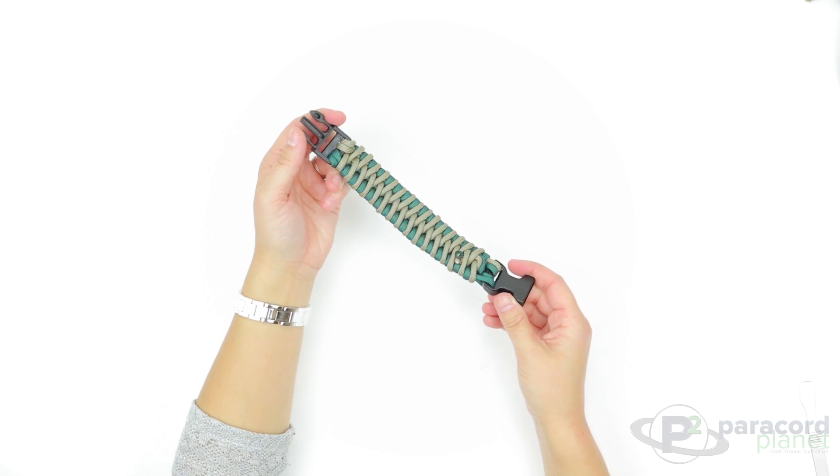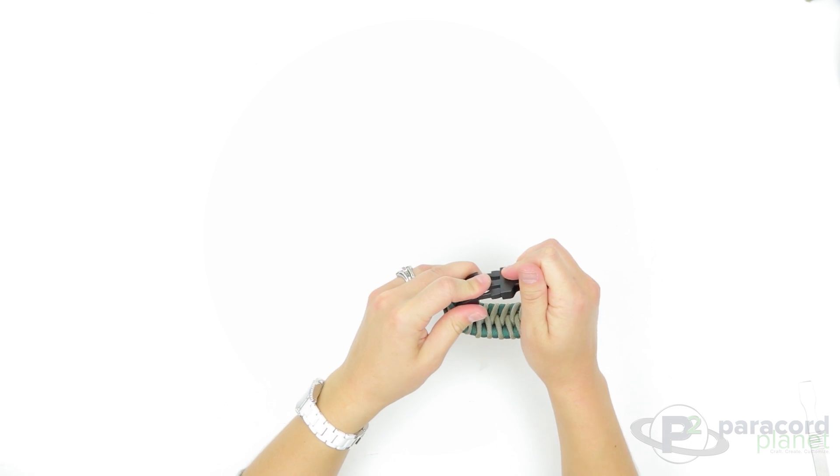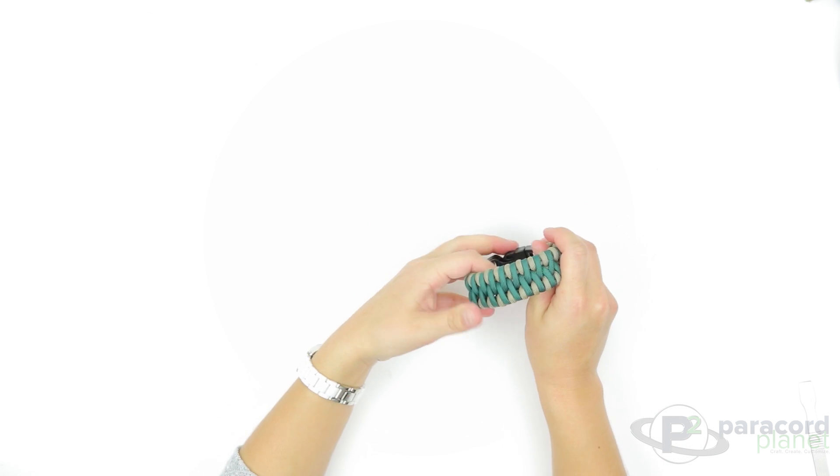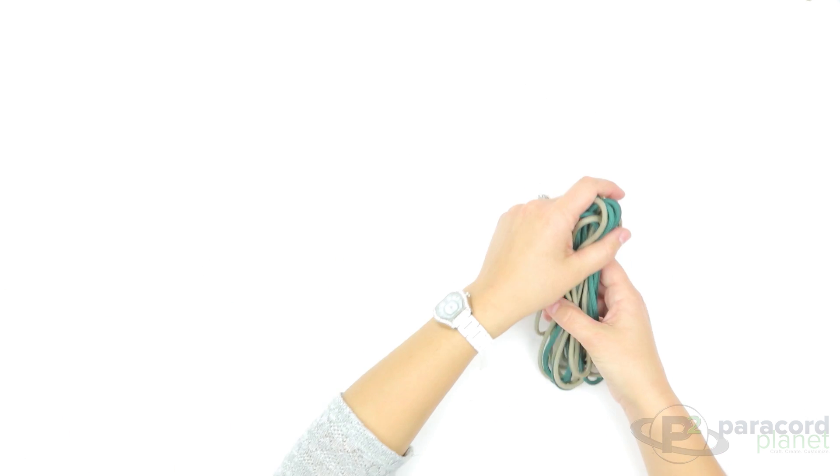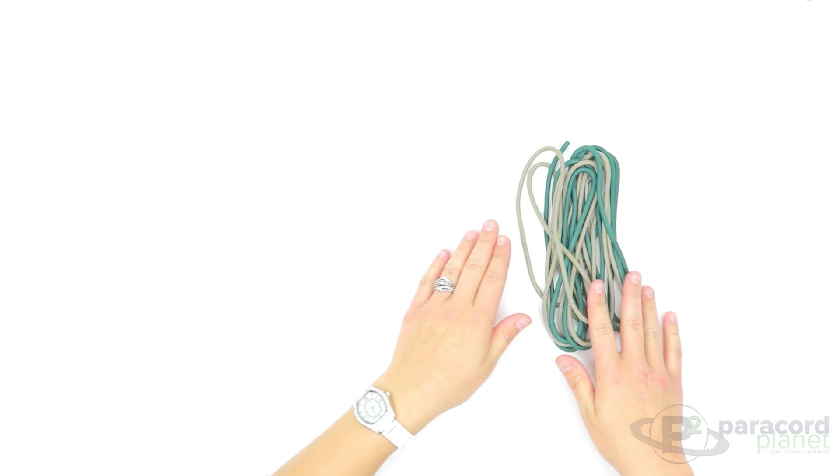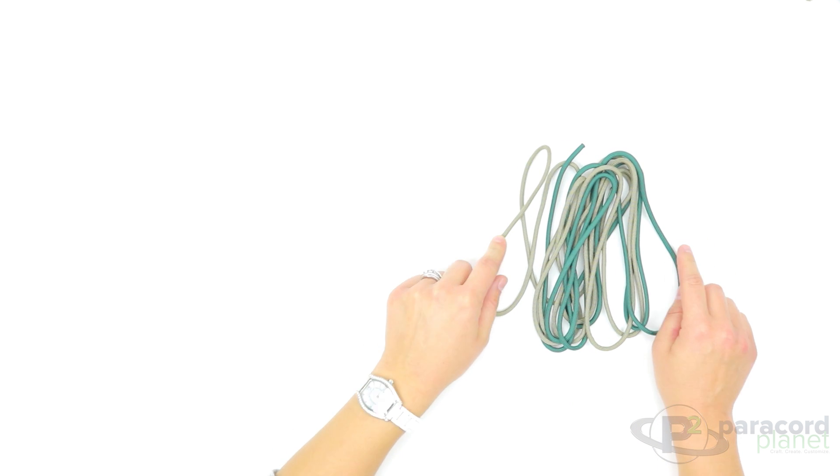Hi everybody, it's Lori from Paracord Planet and this week's tutorial is on the Zaw Bar Paracord Bracelet. For this you will need approximately 14 to 15 feet of paracord for a seven to eight inch bracelet, and here I have emerald green and our tan.